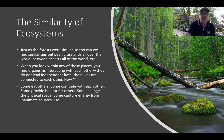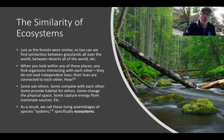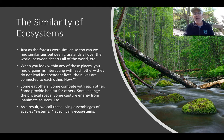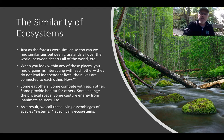For example, some organisms eat other organisms, some compete with others, some provide habitat for others, some change the physical space around them, and some capture energy from inanimate sources and make it into living energy. As a result, we call these assemblages of species systems, because these species all interact and depend on each other. Specifically, these systems are referred to as ecosystems — an assemblage of interacting species.